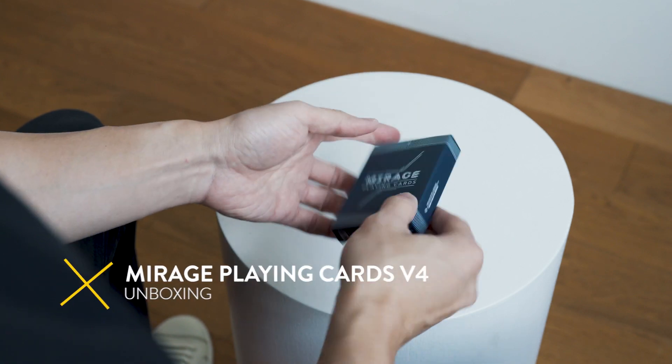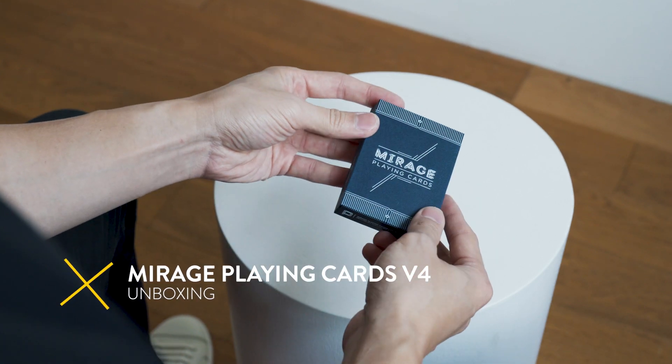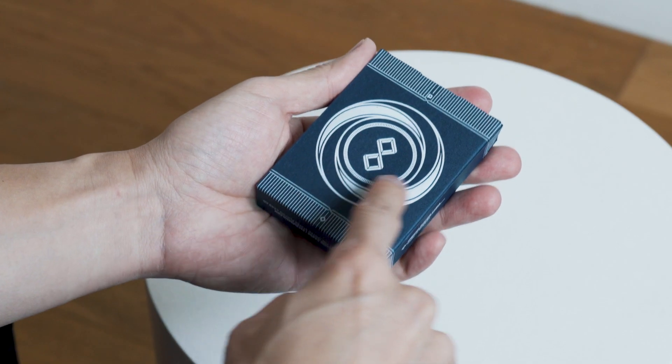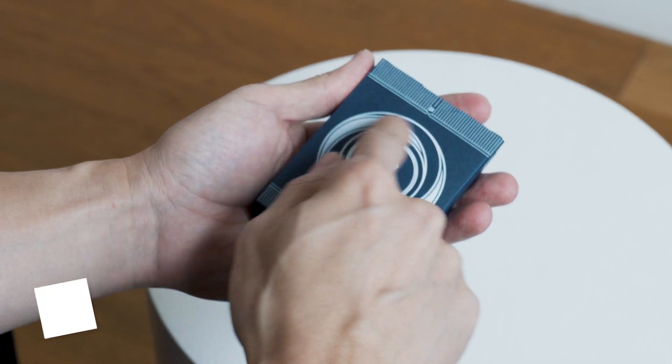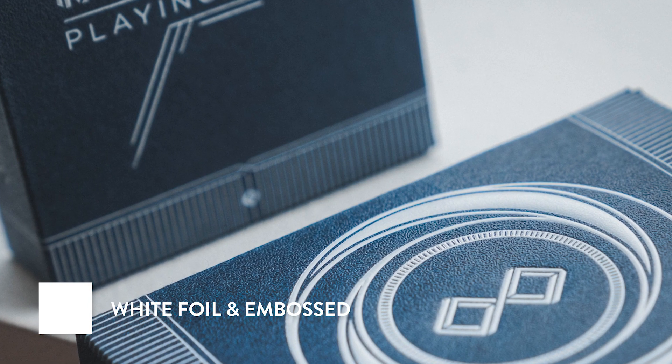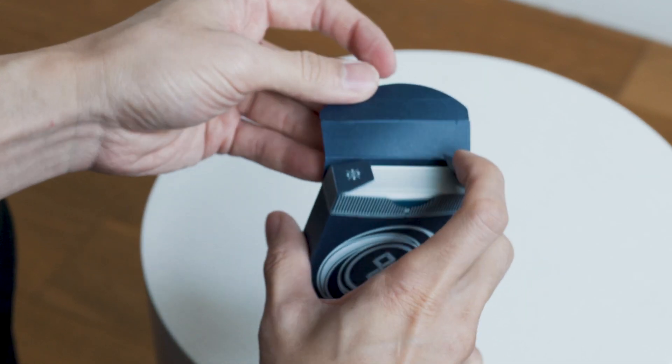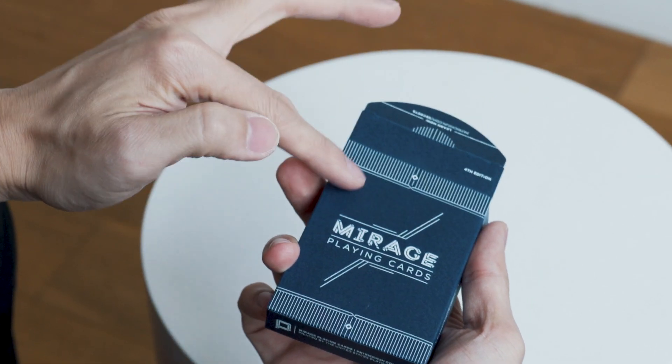So this is what it looks like. As you can see, the box is very similar to the original design. And you'll see that this is the first time we actually print with white foil. It's also embossed. You can actually feel the texture on this. We printed this on a blue dye paper with a really nice texture on it. Let's take a look at the cards.